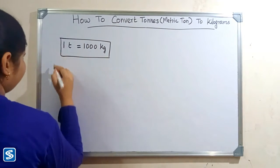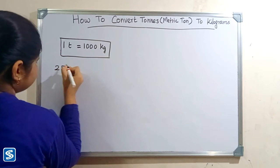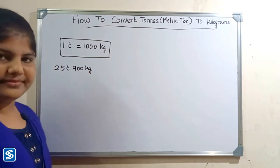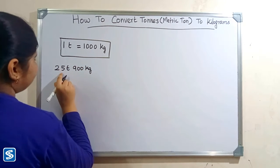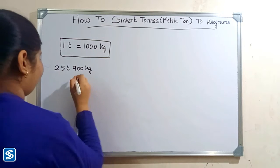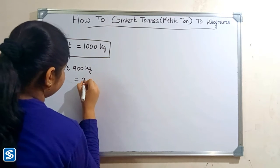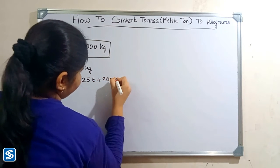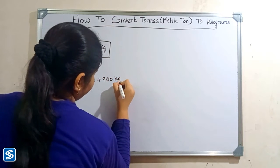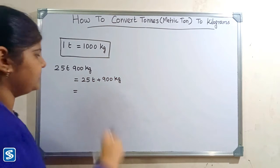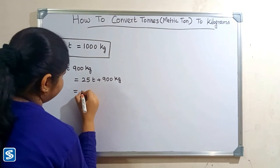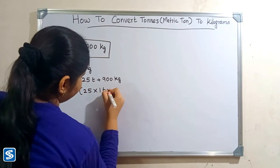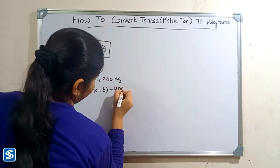Next we will take one more example: twenty five tons nine hundred kilograms. Twenty five tons nine hundred kilograms can be written as twenty five multiply one ton plus nine hundred kilograms.